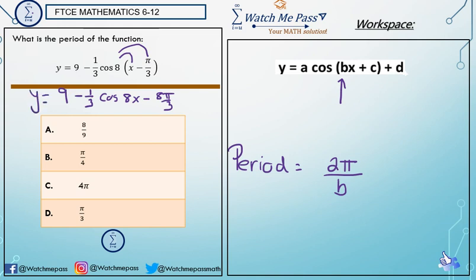So in this case, the coefficient of x right here is 8. So our b value is 8. So now to find the period of the function, we just plug in 8 where we see b. So we have 2π over 8.